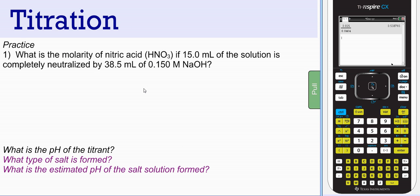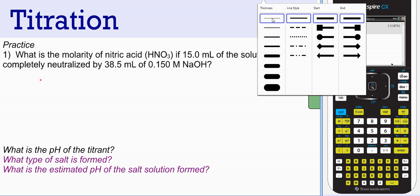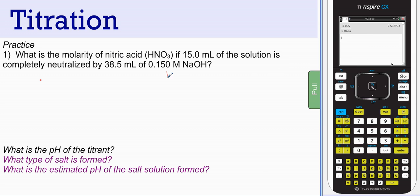What is the molarity of nitric acid if 15 mL of the solution is completely neutralized by 38.5 mL of 0.15 molar sodium hydroxide? Again, you can tell it's a titration because you've neutralized the solution. Titration is a neutralization when it's dealing with acids and bases. So we have 38.5 mL of sodium hydroxide. That's our titrant. And nitric acid is our analyte.